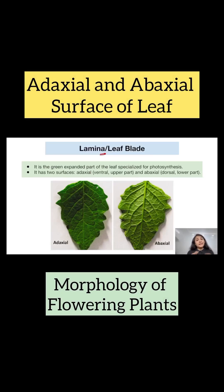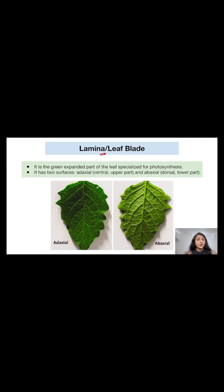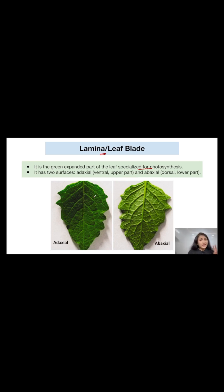The lamina is the green expanded part of the leaf; we can also call it the leaf blade. It is specialized for photosynthesis — this is the part of the leaf which is responsible for photosynthesis.